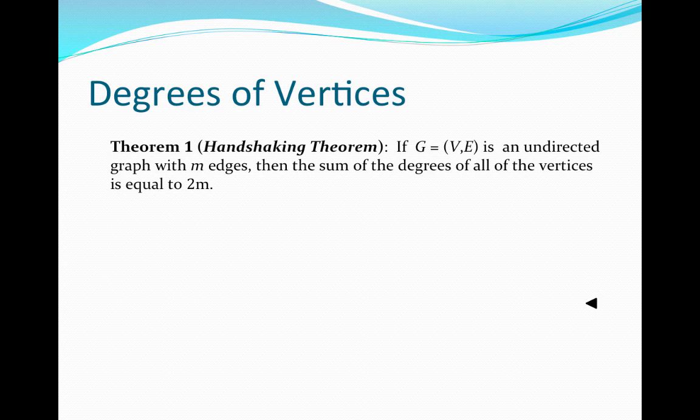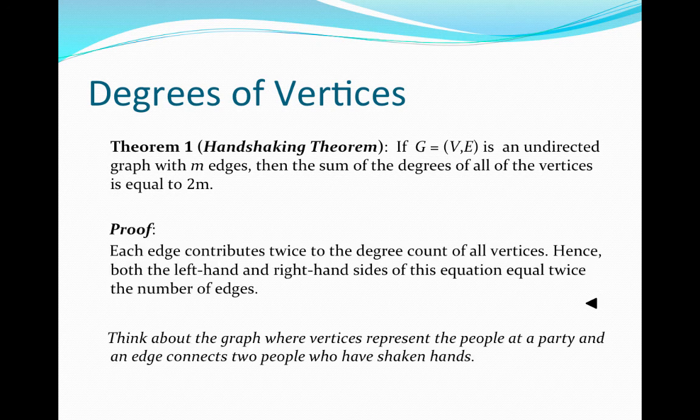And the reason for this is simply because each edge must be incident with two different vertices. Whether it is a loop or not, it's going to be incident with two vertices, whether they're different or the same. Nonetheless, each edge is going to be counted twice when we sum the degrees of all of the vertices, and so this explains why the degrees of all the vertices sum to 2 times the number of edges, because each edge is counted twice in the sum of the degrees of the vertices.